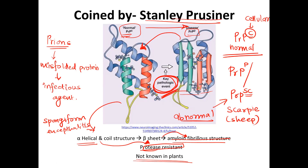The term prion was coined by Stanley Prusiner, who also received a Nobel Prize for this work. You can check my video where I've listed all the Nobel Prizes and Nobel laureates to find out exactly what he received it for.